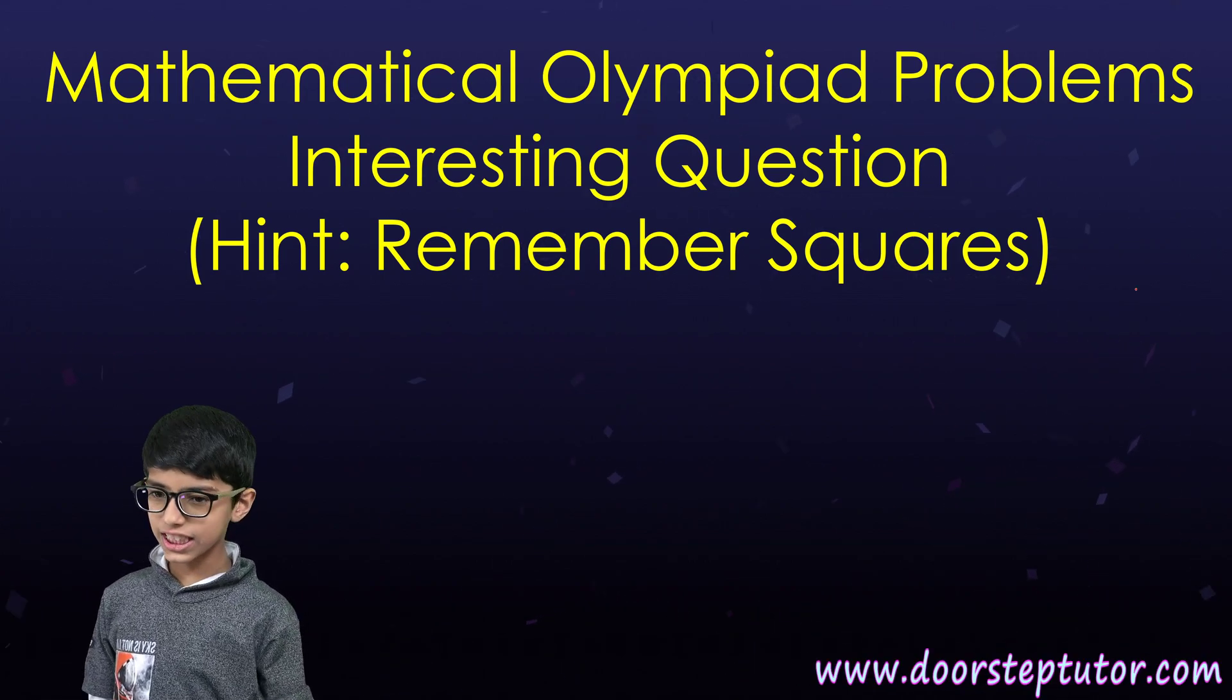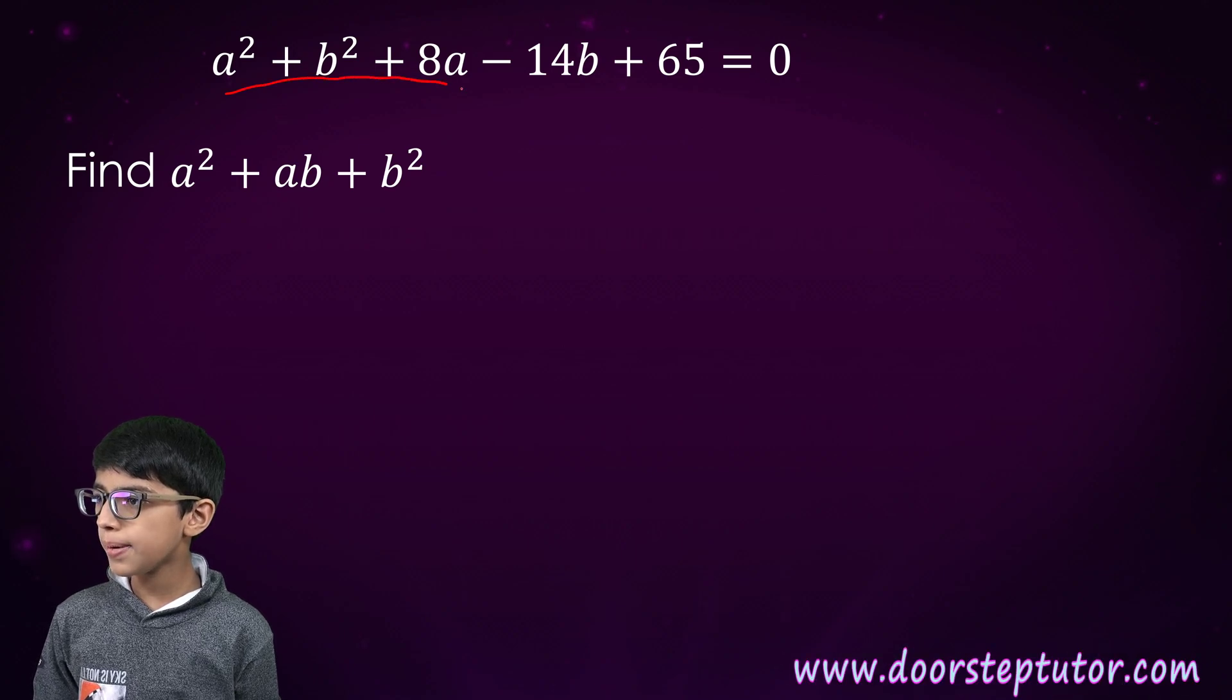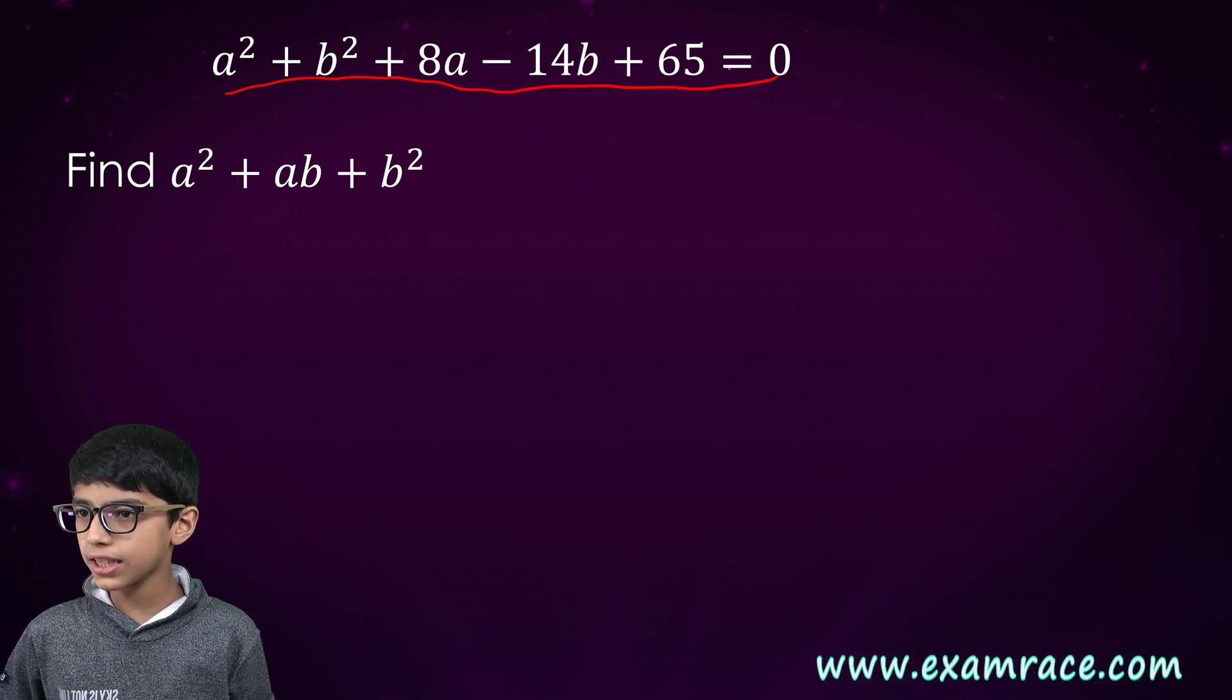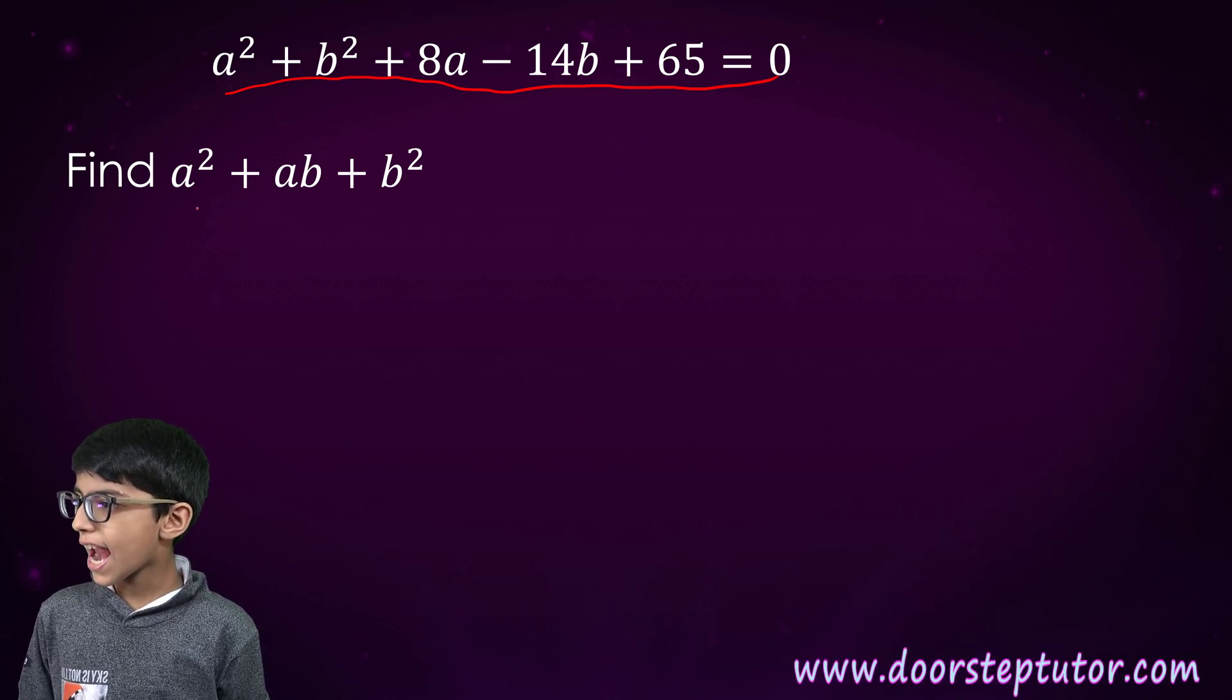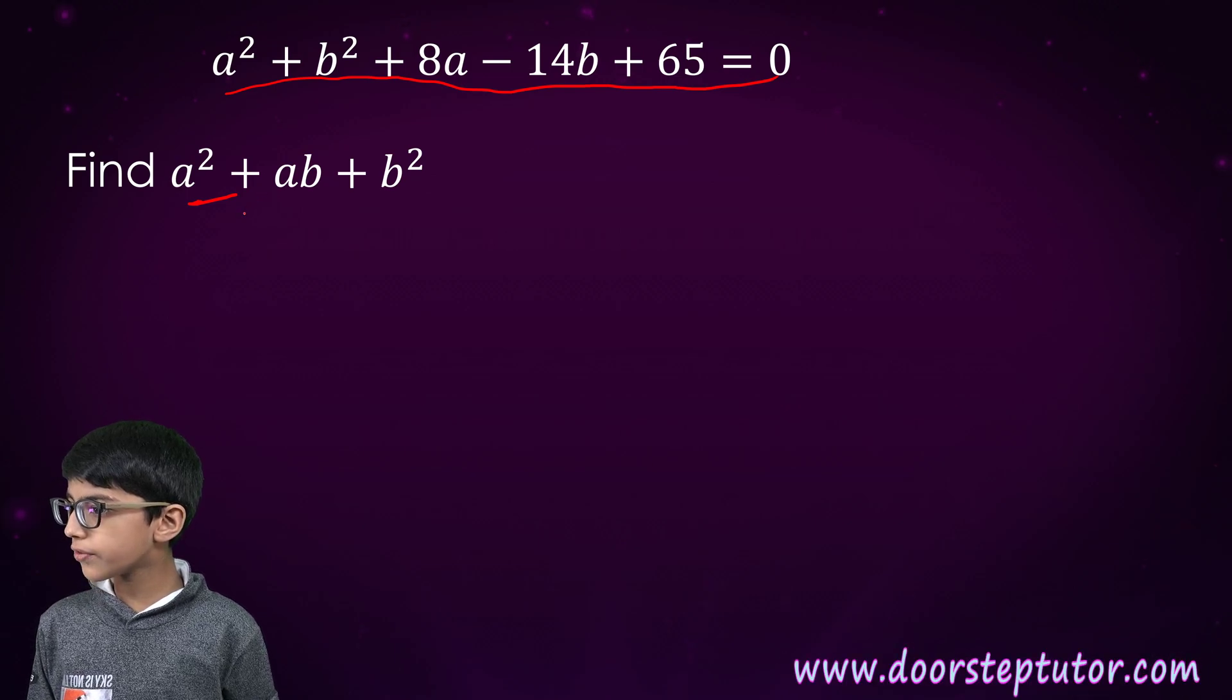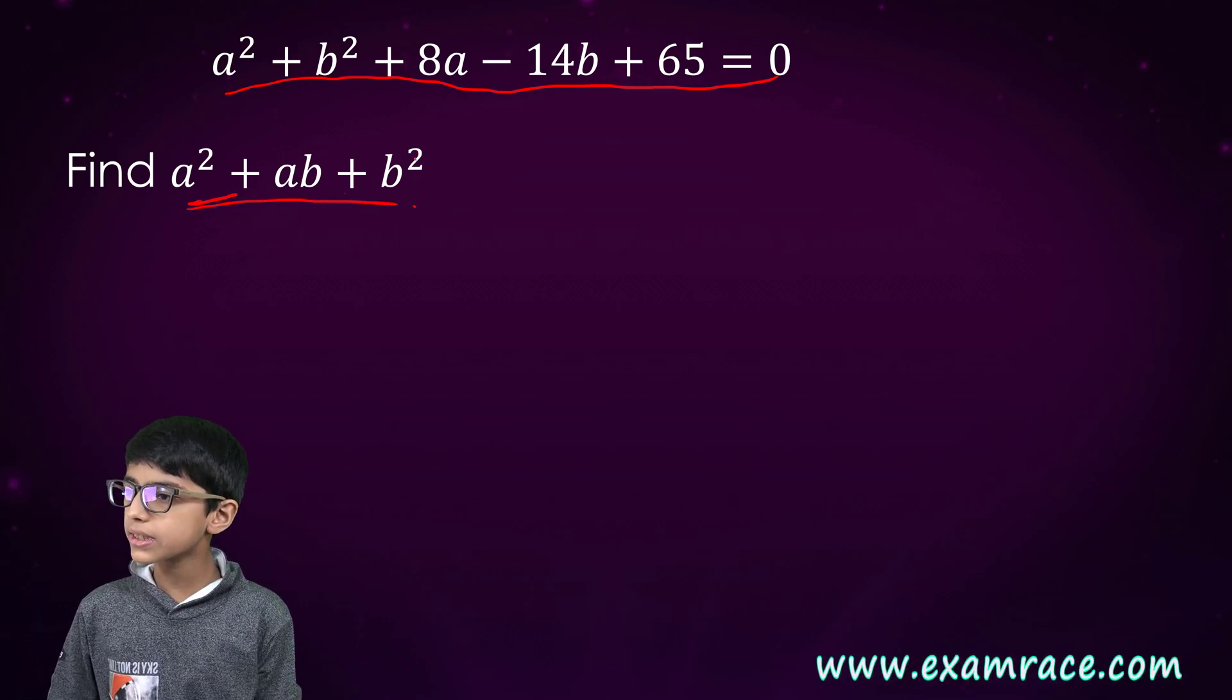Today we will solve an interesting question. Here it is: a² + b² + 8a - 14b + 65 = 0. And we have to find what would be the value of a² + ab + b².